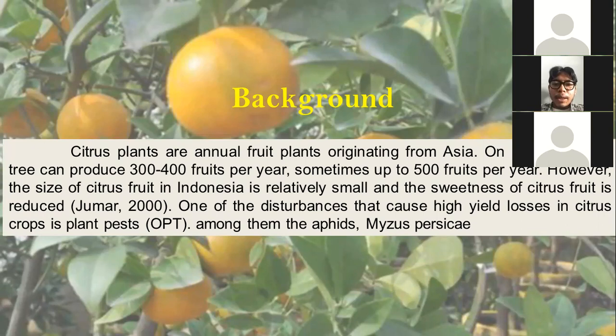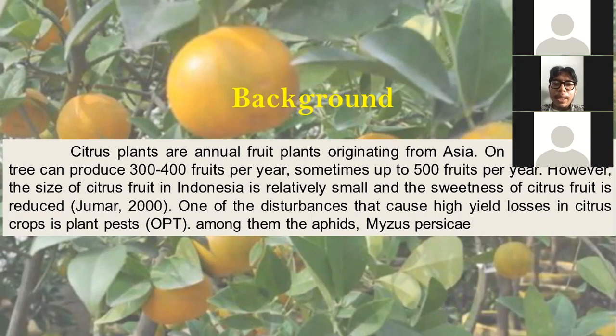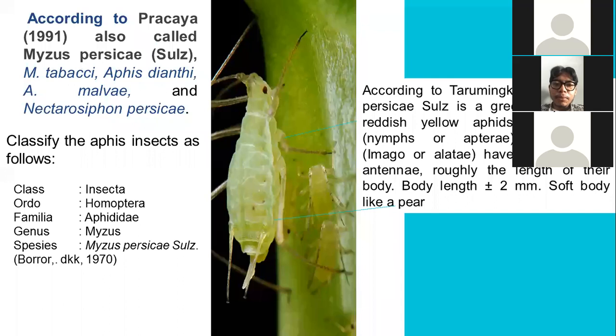The background: citrus plants are annual fruit plants originating from Asia. On average, each tree can produce 300 to 400 fruits per year, sometimes up to 500 fruits per year. However, the size of citrus fruit in Indonesia is relatively small and the sweetness is reduced. One of the disturbances that cause high yield loss in citrus crops is plant pests, among them the aphid Myzus persicae.